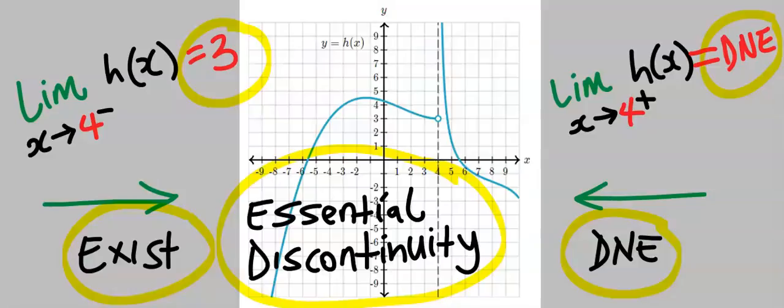Because one side exists and the other side does not exist, both must be equal if this limit must exist. We conclude that the limit of h(x) does not exist.